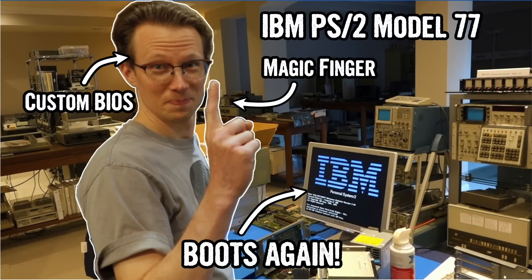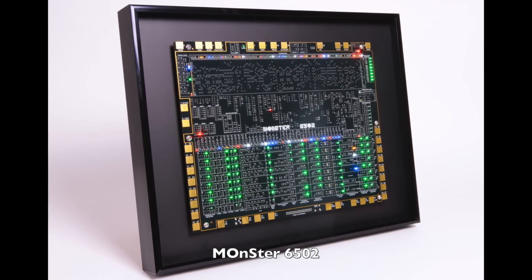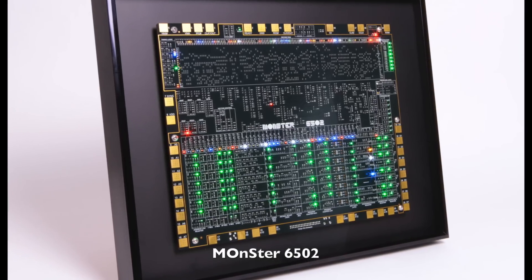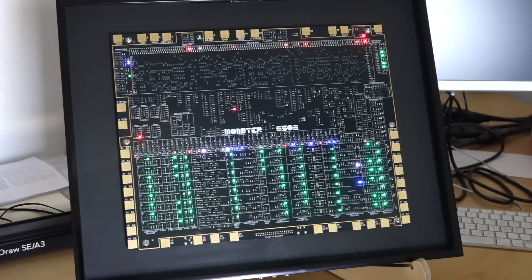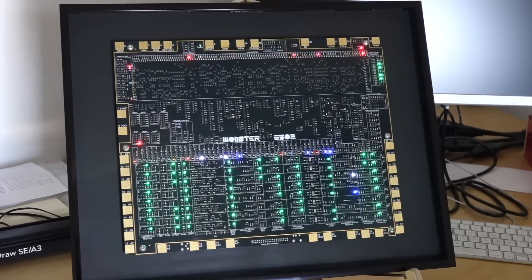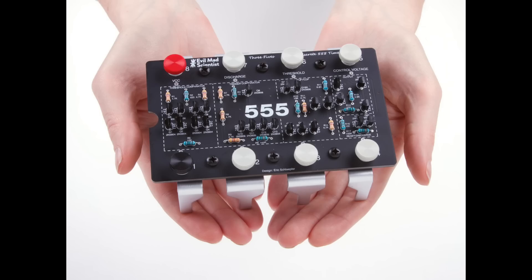Those of you who follow the channel are familiar with Eric, who repaired our ailing IBM PS2 using his magic finger and a great deal of expertise. He is a repeat offender when it comes to crazy retro electronics projects. He is the creator of the Monster 6502, a fully working replica of the 6502 processor made out of real transistors. In the same vein, he and Evil Mad Scientist created this extra large version of the 555 timer, which you can buy in a kit.